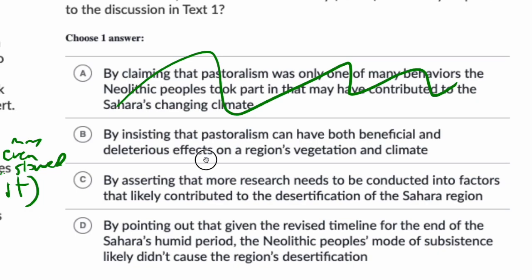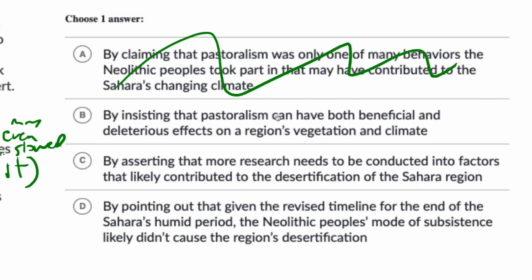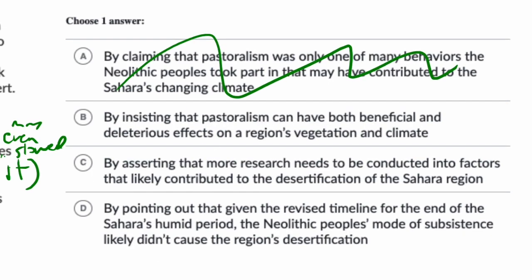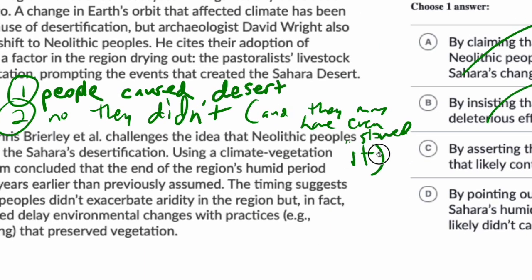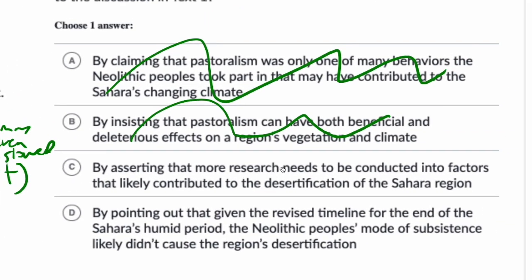Answer choice B: 'by insisting that pastoralism can have both beneficial and deleterious — or harmful — effects on a region's vegetation and climate.' Potentially tempting, but that's not really the focus of the second passage. Text 2 says they may have helped delay environmental changes with practices that preserve vegetation, not that pastoralism has harmful effects.